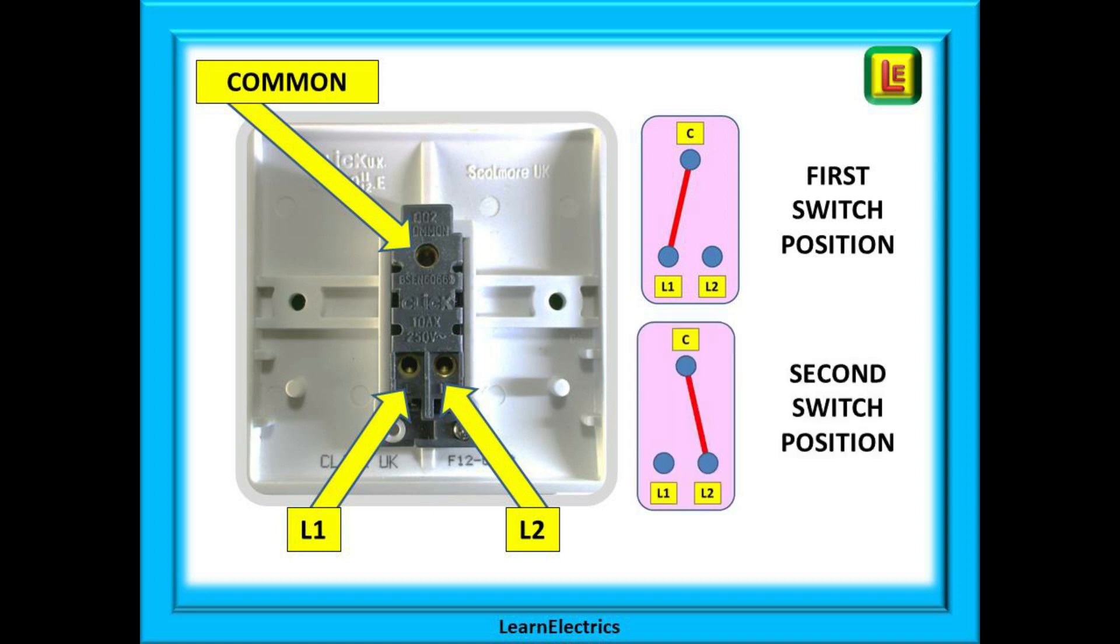If we operate the switch to the second switch position, the metallic link inside the switch will change to position L2, but the common connection does not change, hence the word common. It is common to both L1 and L2, and now electricity can flow between common and L2.